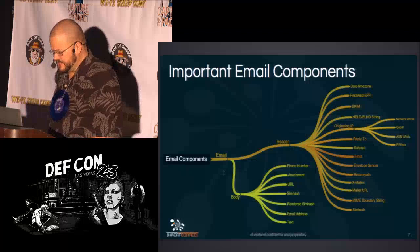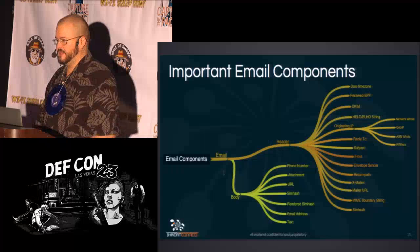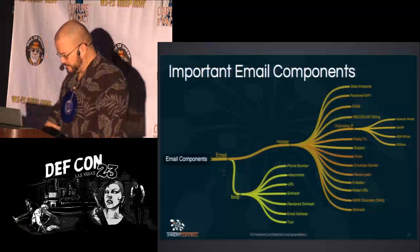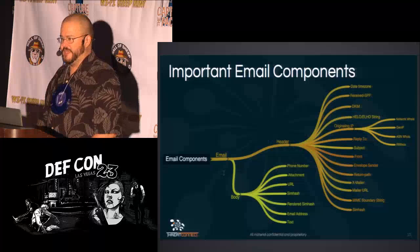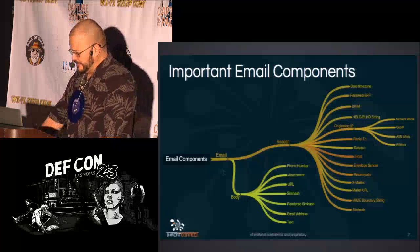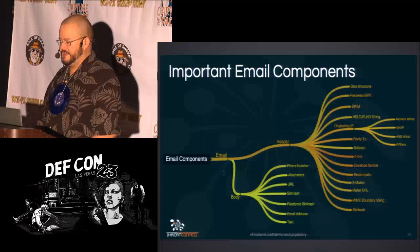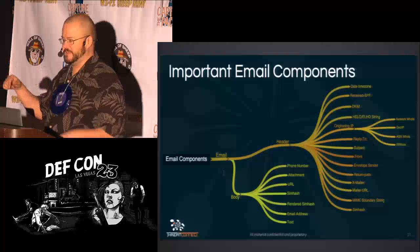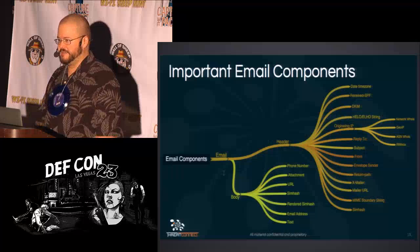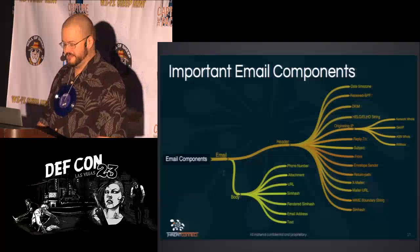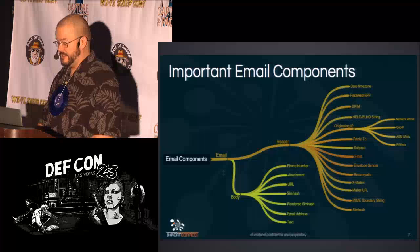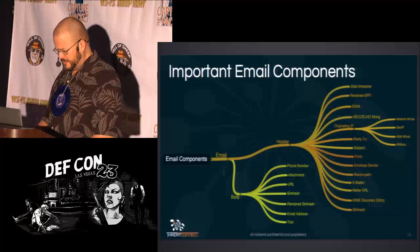DKIM — domain keys — is another anti-spam header, driven cryptographically. One interesting thing: a couple of years ago, LinkedIn had an idea of injecting their own spam in a man-in-the-middle system called Intro. Intro basically broke DKIM very badly because it changed the signature of the email by tampering with all your emails. Check it out on YouTube — I did a talk on LinkedIn Intro specifically a few years ago.